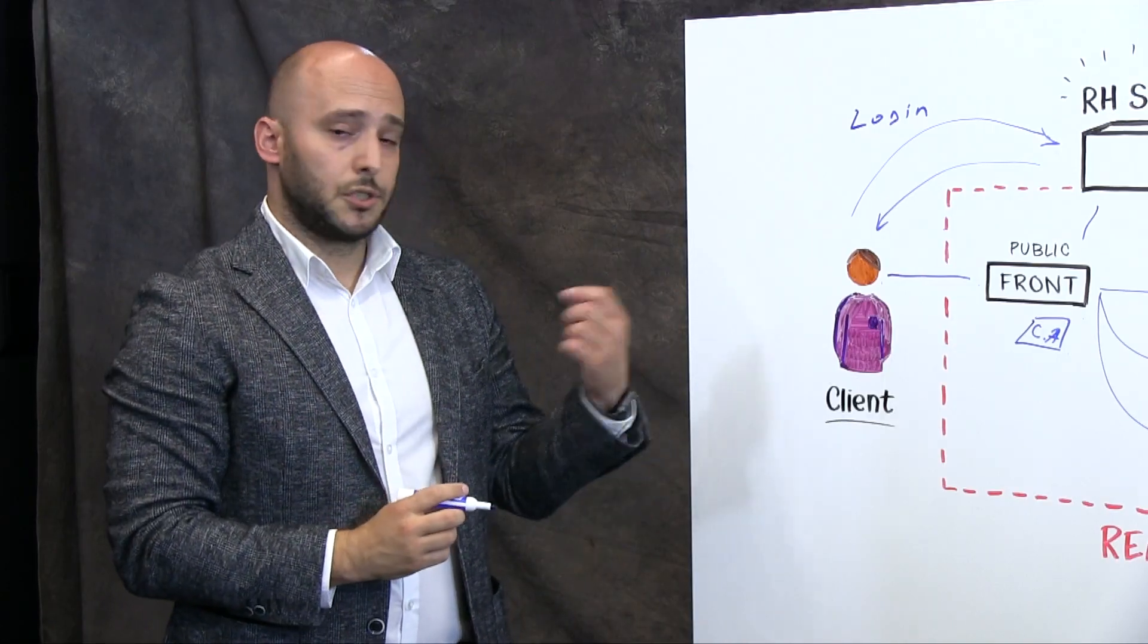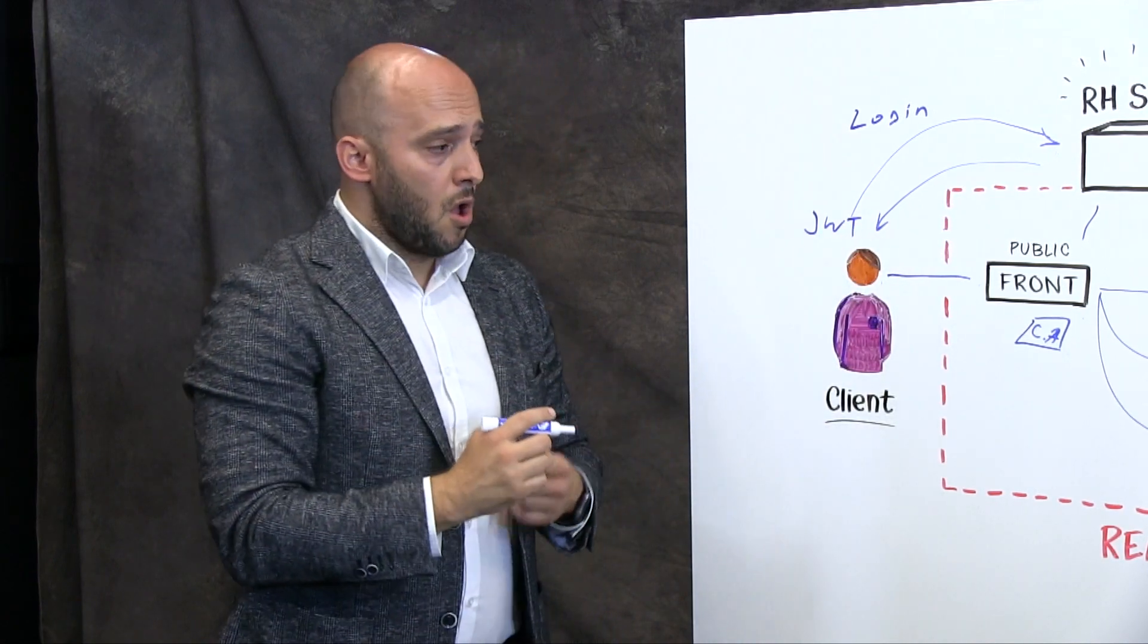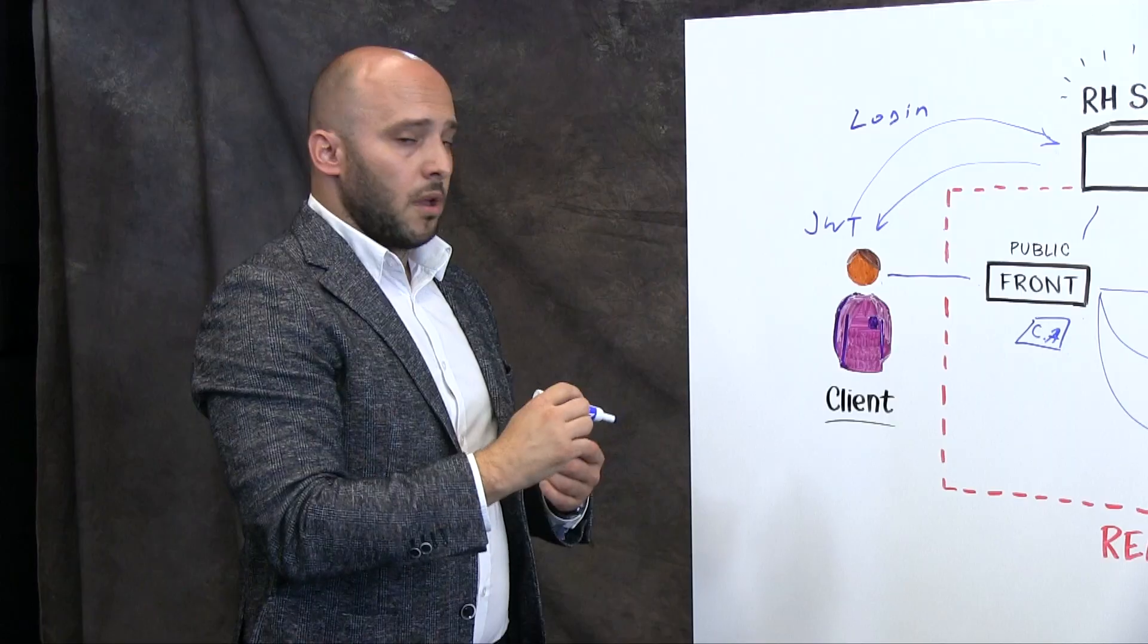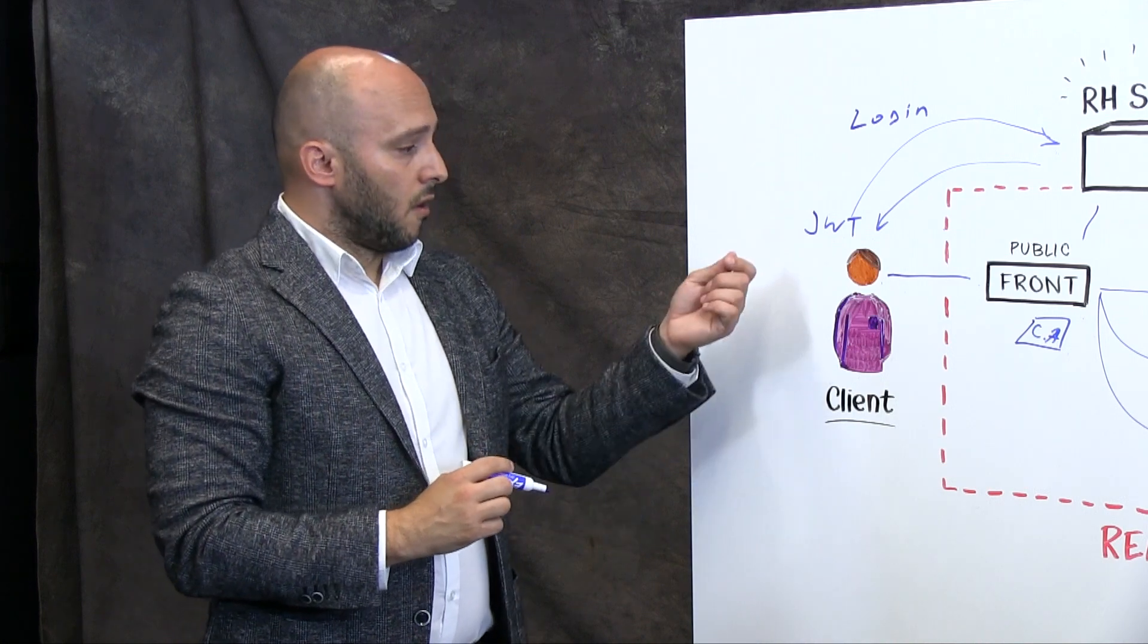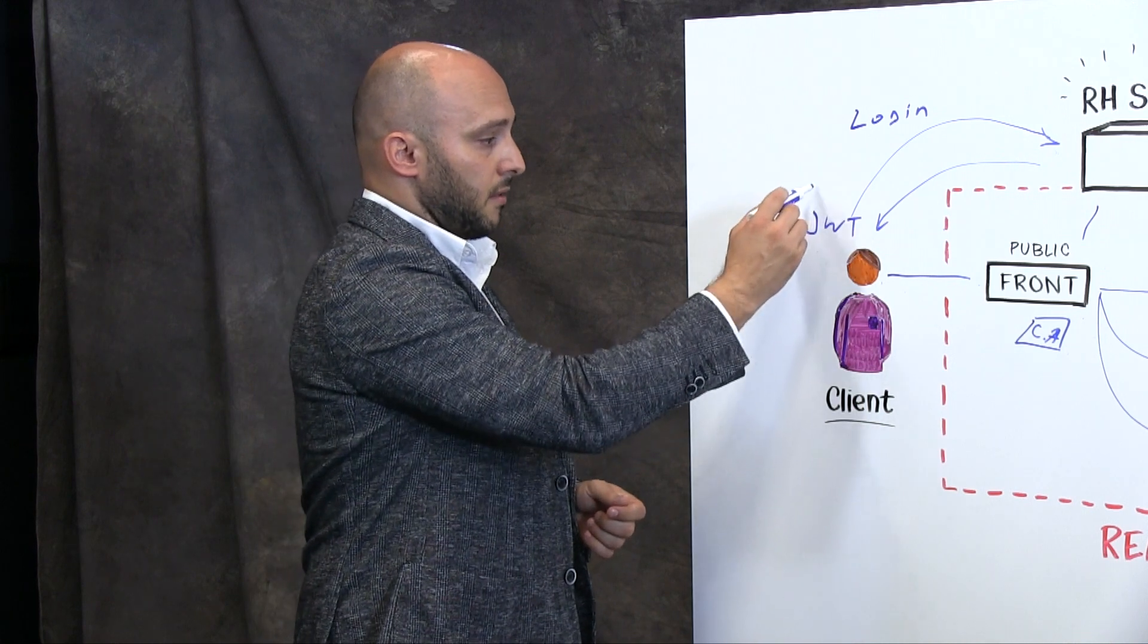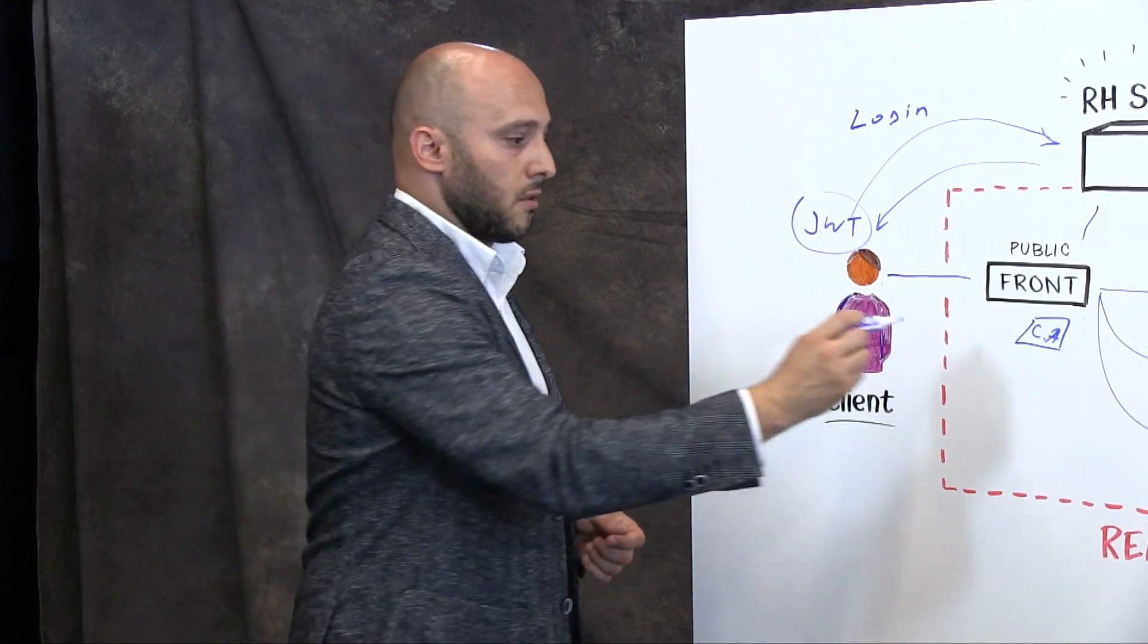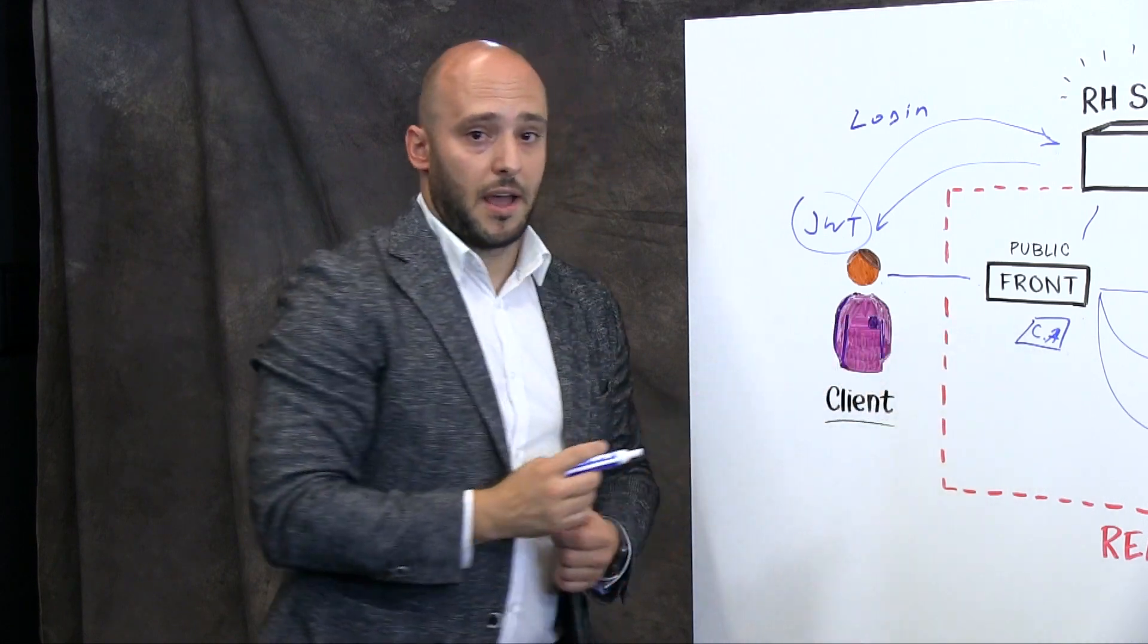After we manage to get our JWT token, we will have all the new requests as authenticated requests. That means this token will go into the header of the request in order to get validated through the client adapter.